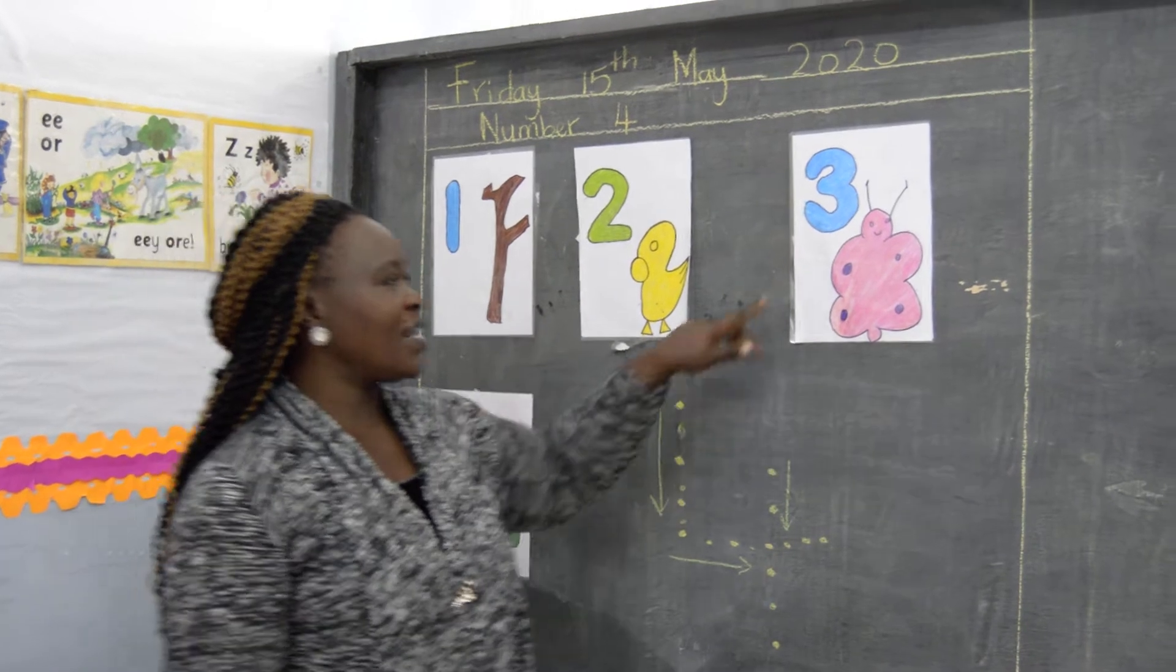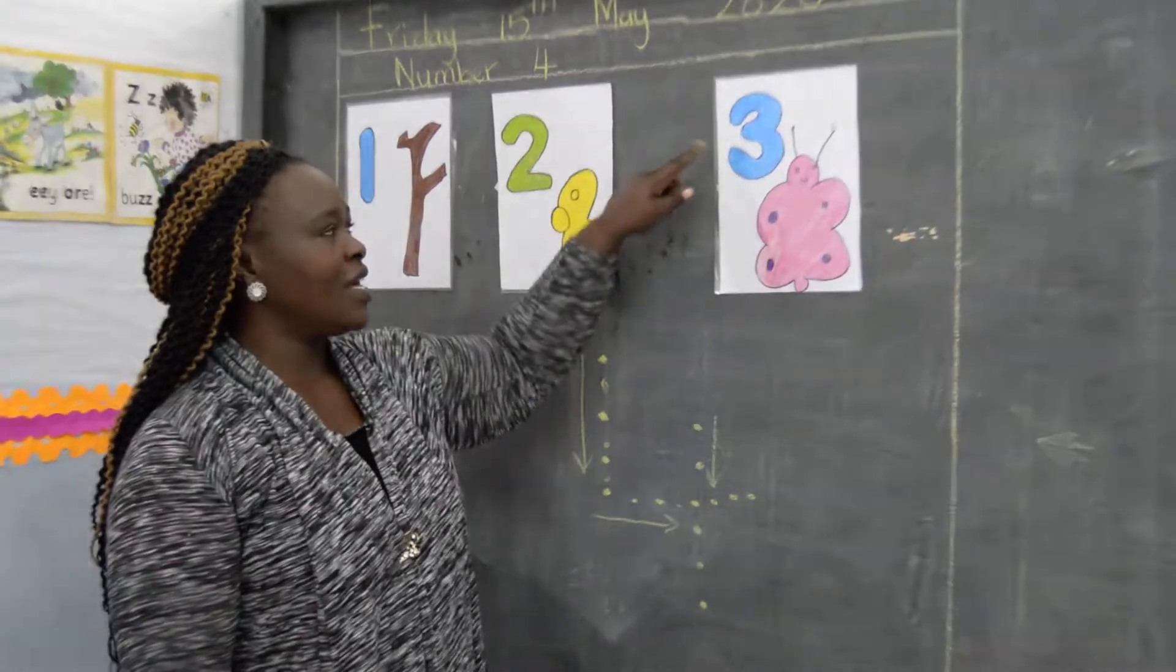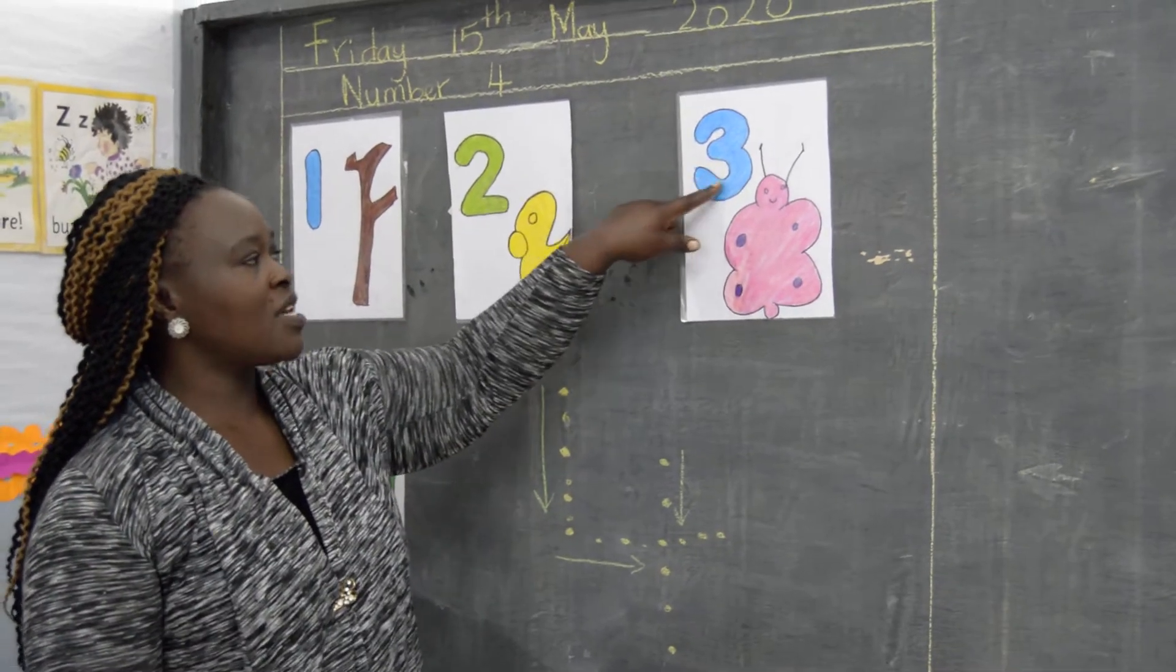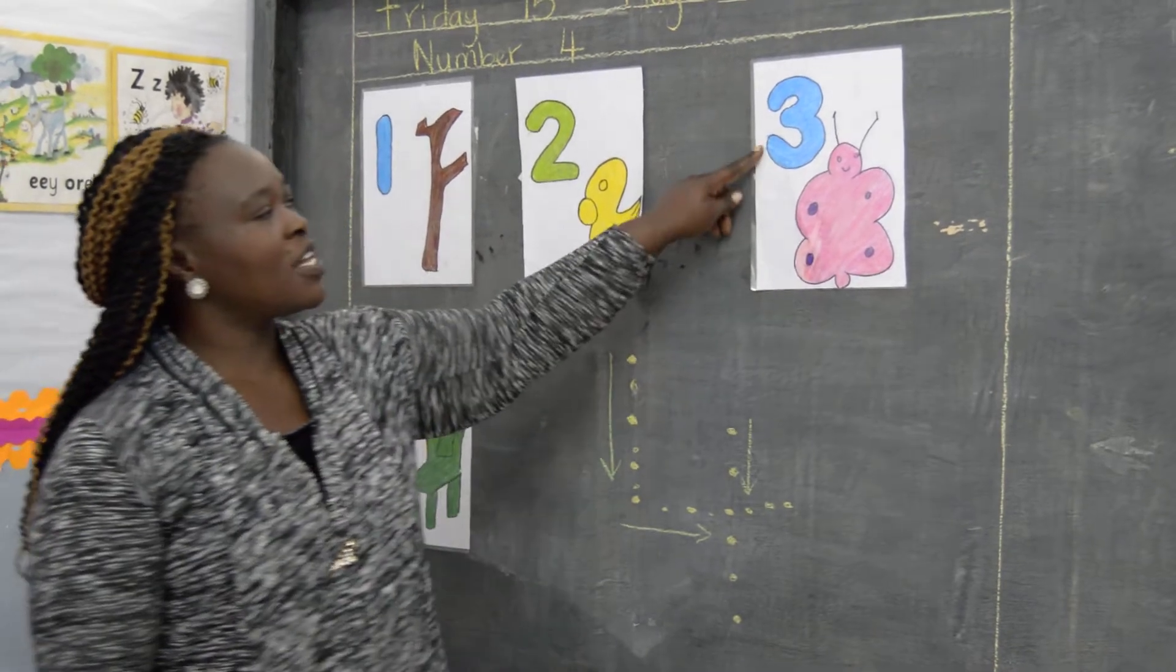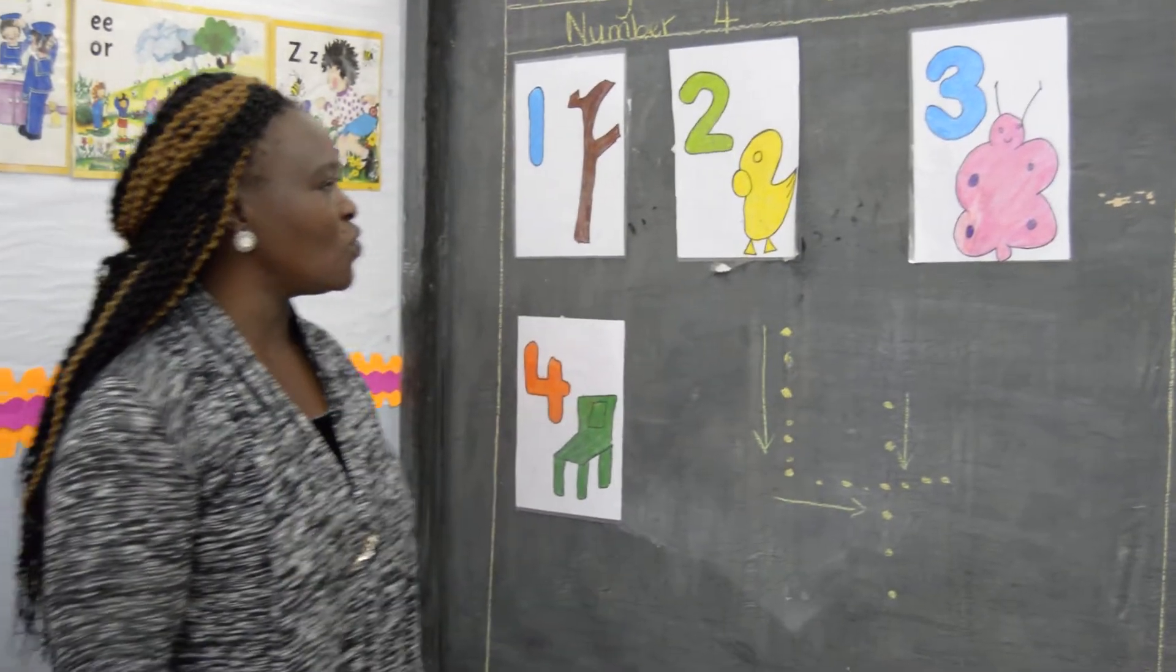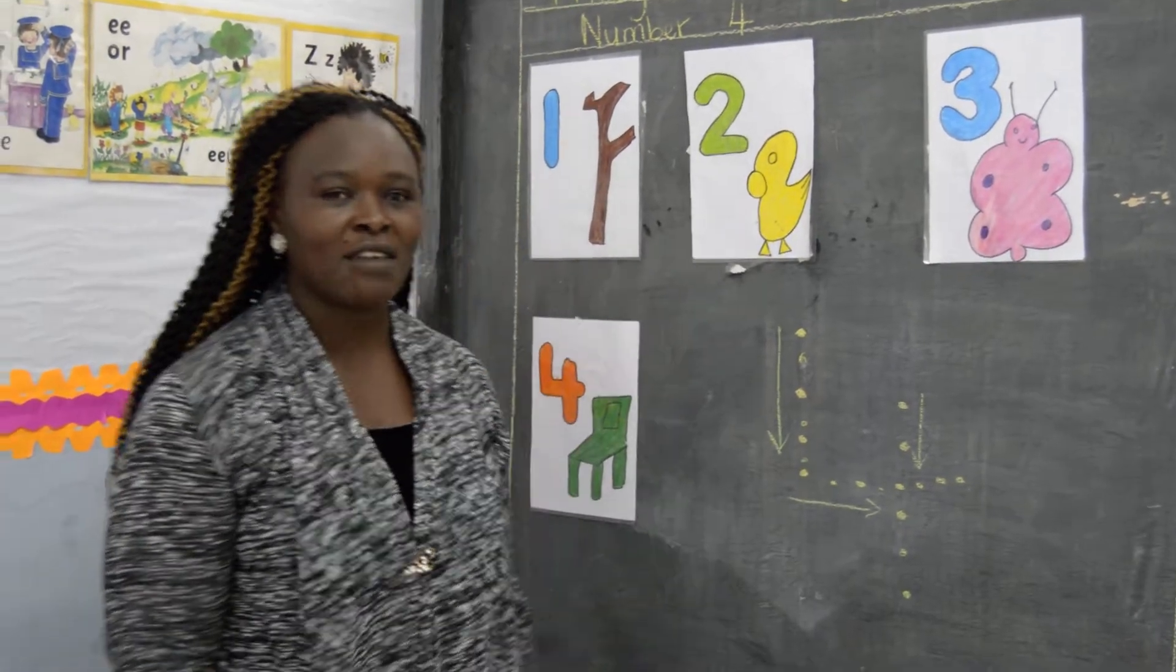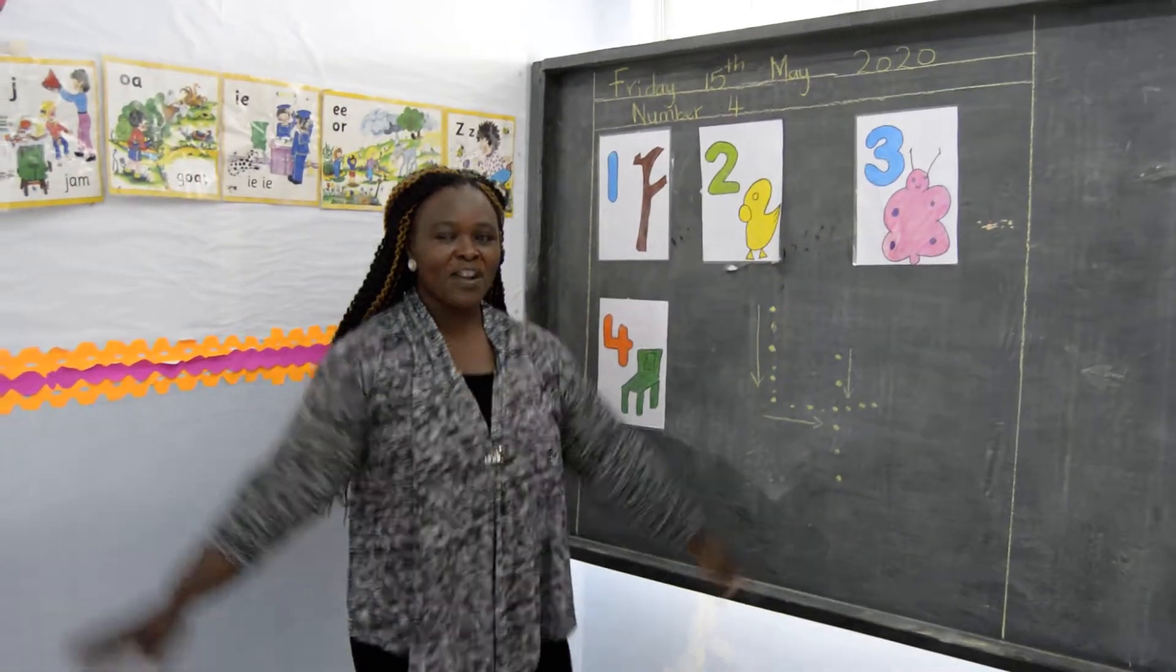The other one is number three. Repeat after me, children. Three. Three like a butterfly. Three like a butterfly. What does the butterfly do? Three like a butterfly. Fly, fly, fly, fly.